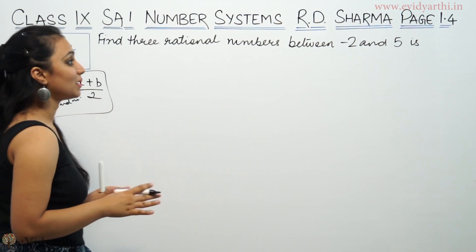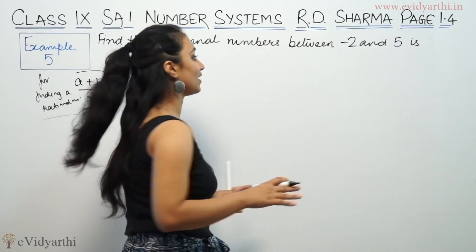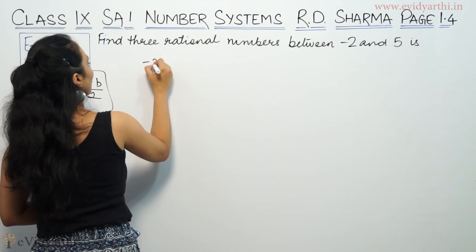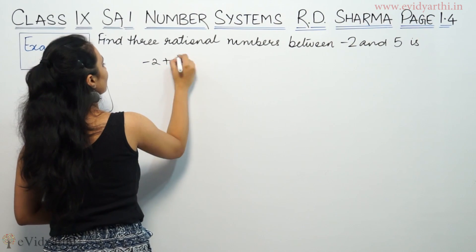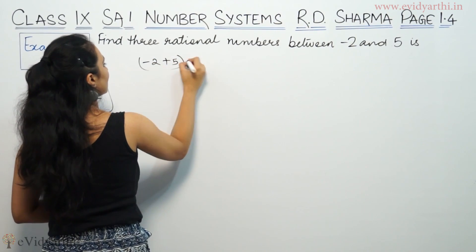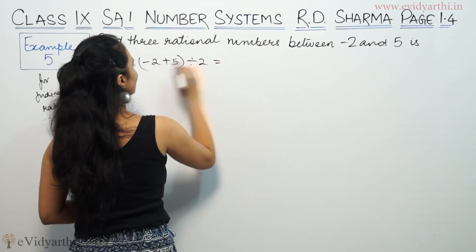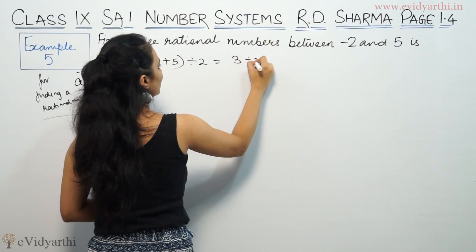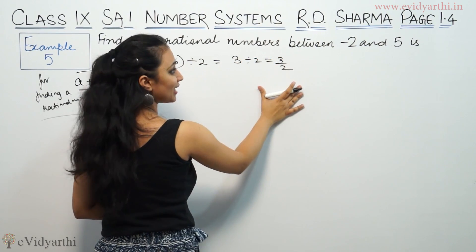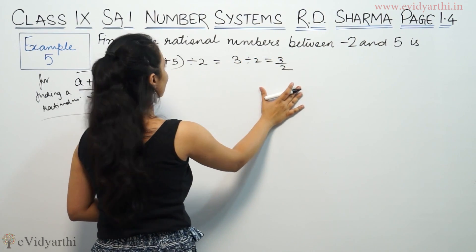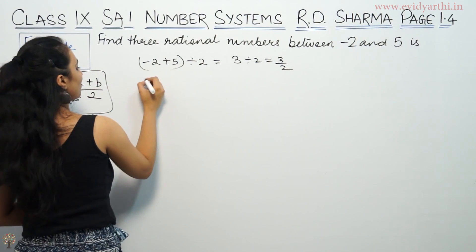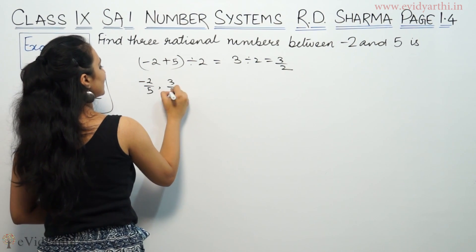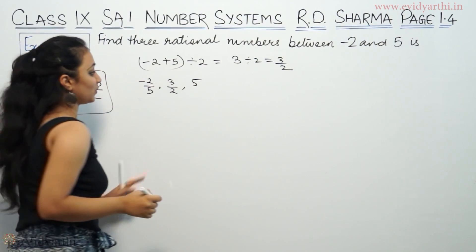So here we have minus 2 and 5. We write minus 2 plus 5 divided by 2. That means this is 3 divided by 2. So 3 by 2 is a rational number between minus 2 and 5.